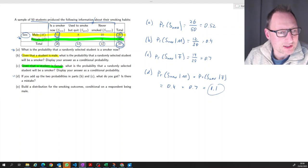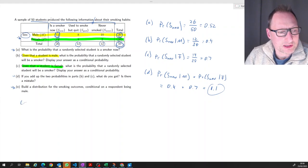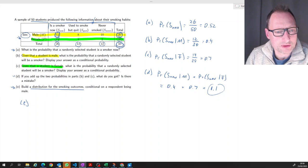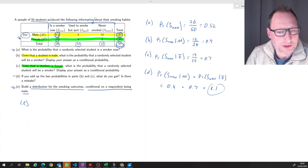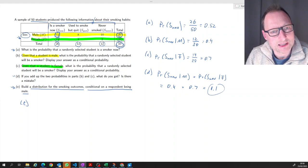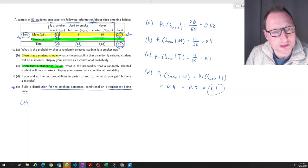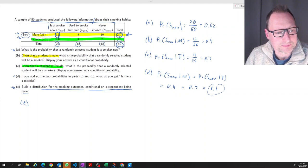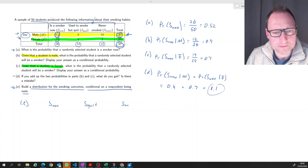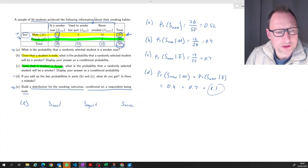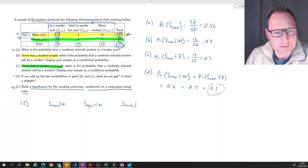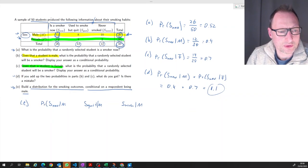So if now instead we do what's being asked in part E, we build a distribution for the smoking outcomes conditional on a respondent being male. So now we are basically building the entire conditional distribution here, that yellow distribution. How does that look like? So we're having three outcomes: S_now, S_quit, or S_never, and all of them conditional on being male. So conditional on being male, we want the probabilities for all of these outcomes.